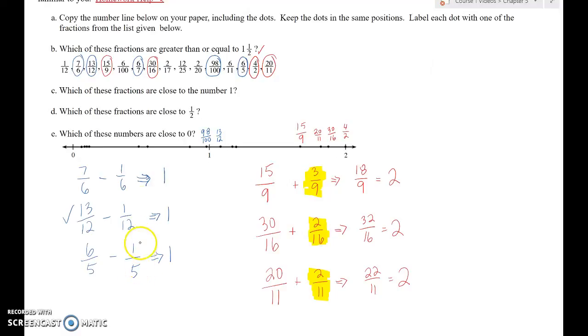So this would be 13/12. And then a sixth is smaller than a fifth. So the 7/6 must be here. That means that 6/5 is here.